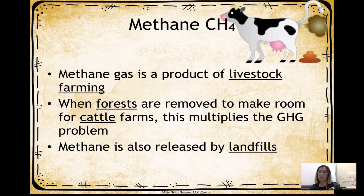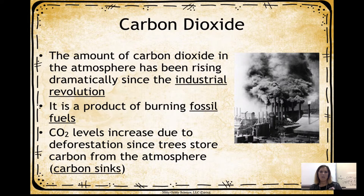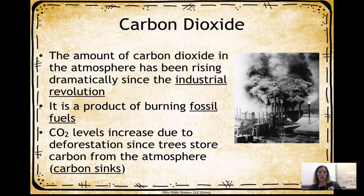Methane is also released by landfills. When things are buried in landfills through the digging process, it disrupts what's under the earth and causes greenhouse gases that can no longer be absorbed. Carbon dioxide levels in the atmosphere have been rising because of the Industrial Revolution — the boom of factories producing fossil fuels by burning them to create products. Due to deforestation, trees aren't able to absorb all the carbon dioxide to replenish it back into the earth. Trees store carbon from the atmosphere in a process called carbon sinking, and removing them allows greenhouse gases into our atmosphere.